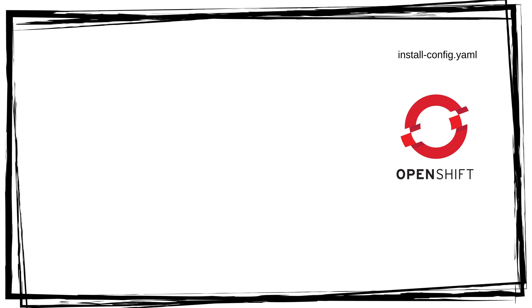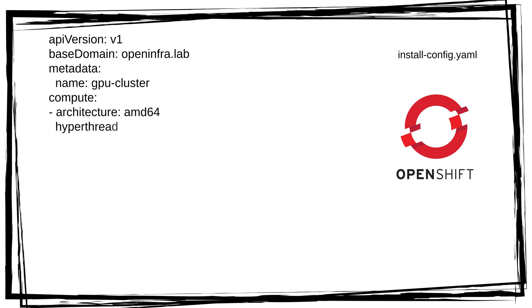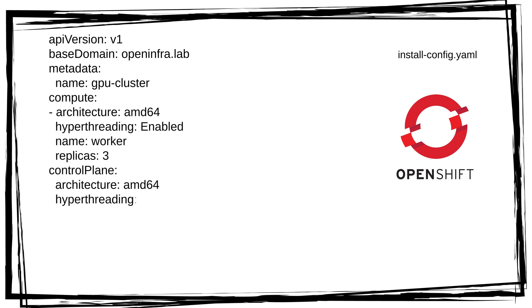Let me walk you through them both, starting with the install config. In the top section of your install config file, you set up your DNS domain and cluster name. Next is the number of workers and controllers — in my case, I'm setting three for both.